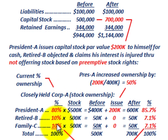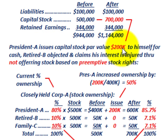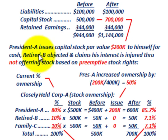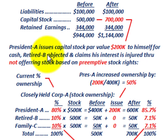The current percent of ownership is established. Now, what we're talking about is this $200,000 increase in capital stock. President A issues capital stock at par value of $200,000 to himself for cash — he put cash into the company and capital stock is recorded in his name at $200,000. That's where we come into preemptive rights, because retired stockholder B objected, claiming his interest is injured through not being offered stock based on preemptive stock rights. He's saying he should have had a chance to buy into this stock.